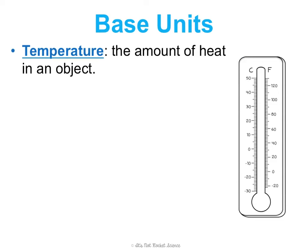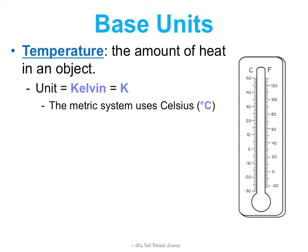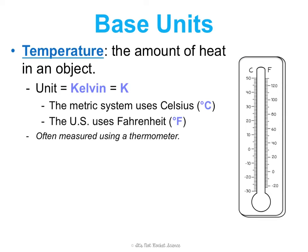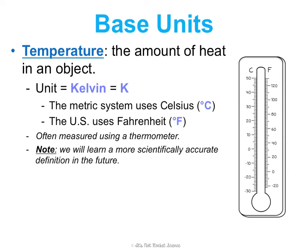Temperature is the amount of heat in an object. The SI unit is Kelvin, abbreviated as a capital K. The metric system uses Celsius, which is degrees C, and the United States uses Fahrenheit, which is degrees F. It's often measured using a thermometer. We'll learn a more scientifically accurate definition of temperature in the future, but for now we'll keep it simple.